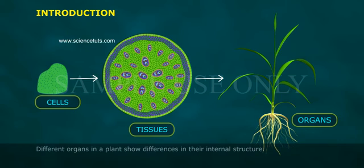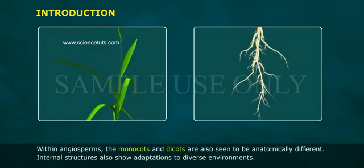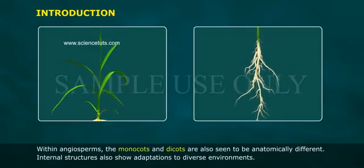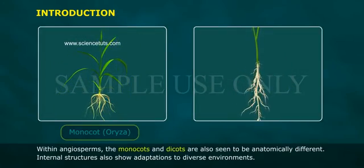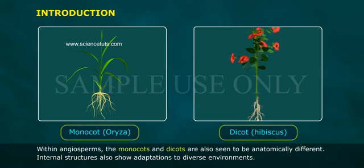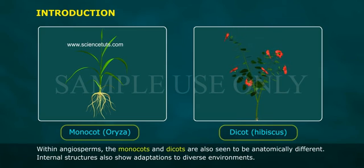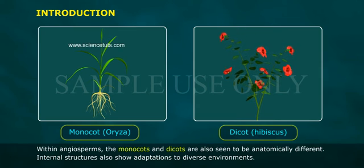Different organs in a plant show differences in internal structure. Within angiosperms, the monocots and dicots are also seen to be anatomically different. Internal structures also show adaptations to diverse environments.